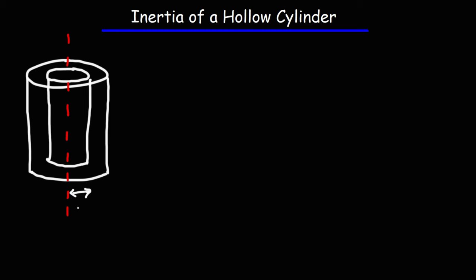R1 is going to be the radius of the inside part of the hollow cylinder. R2 is the outer radius. So we have the inner radius and the outer radius. And let's say this is some generic point — the distance between the axis of rotation and that generic point is going to be lowercase r.